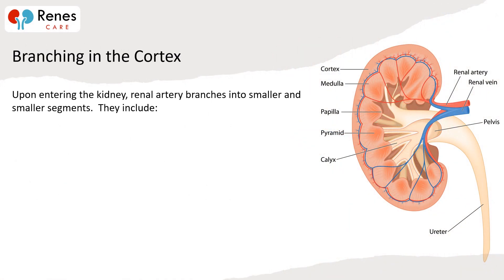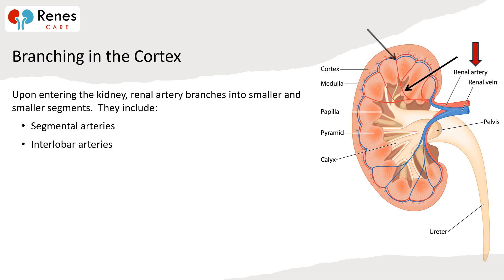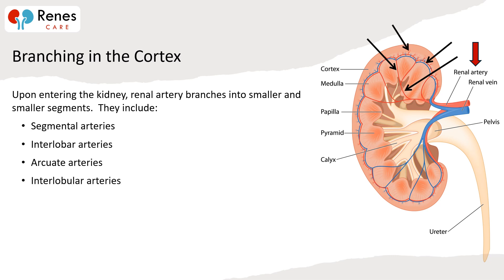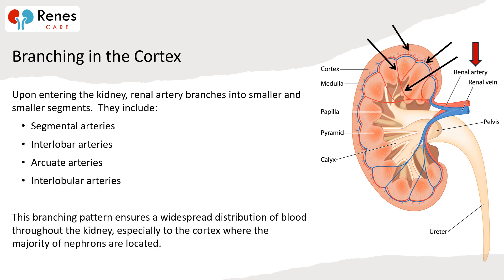Upon entering the kidney, the renal artery branches into smaller and smaller segments, including segmental arteries, interlobar arteries, arcuate arteries, and interlobular arteries. This branching pattern ensures a widespread distribution of blood throughout the kidney, especially to the cortex, where the majority of nephrons are located.